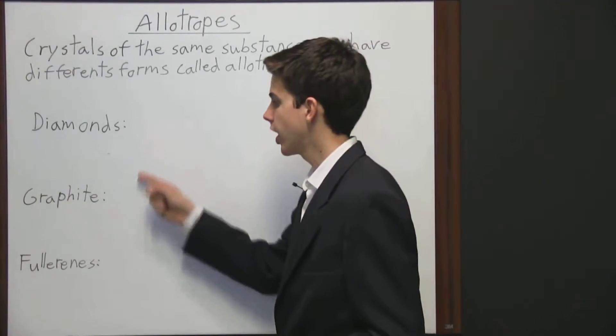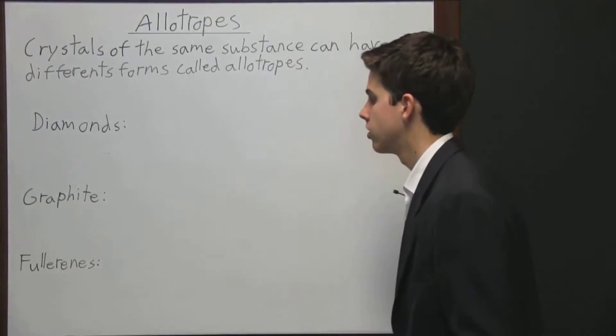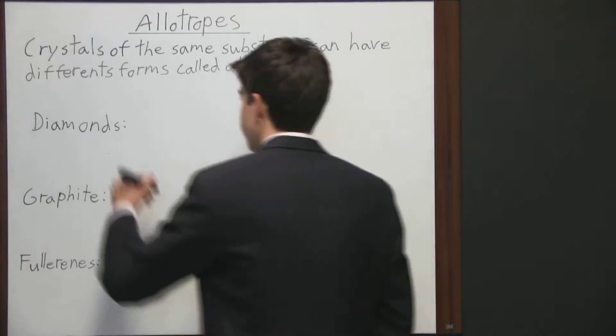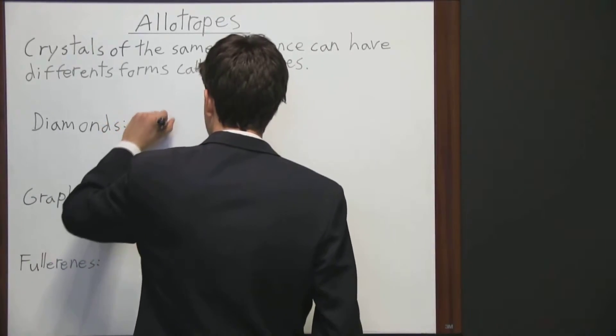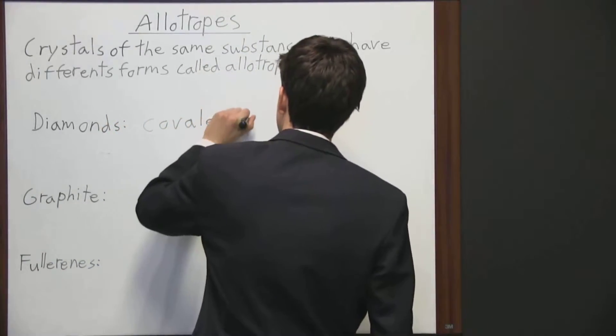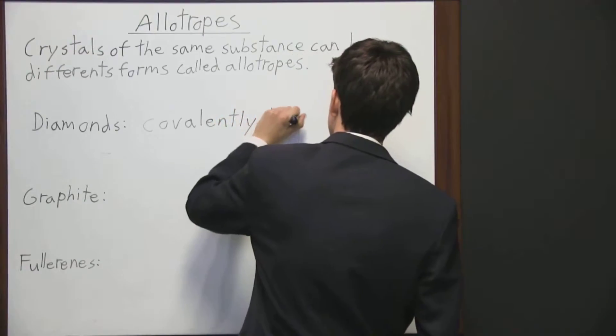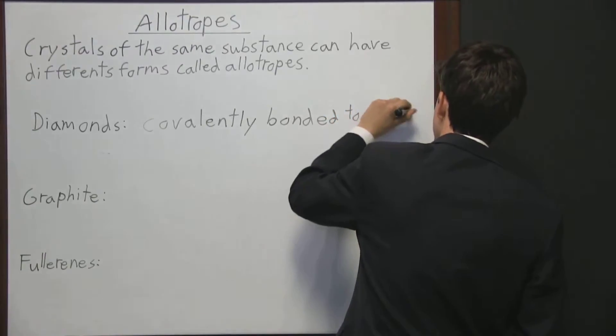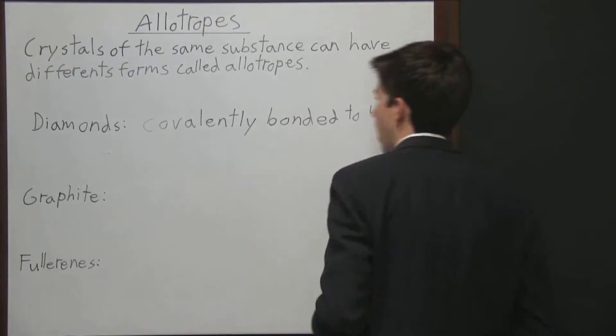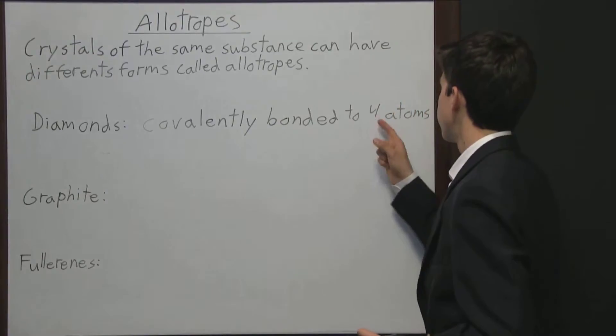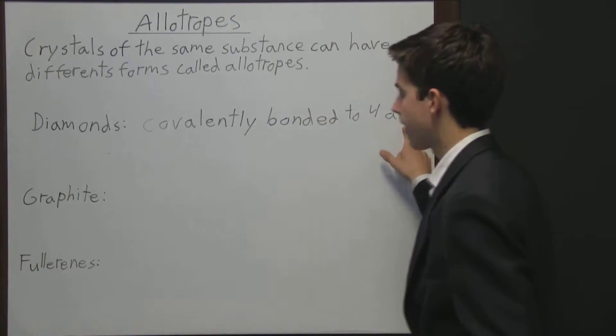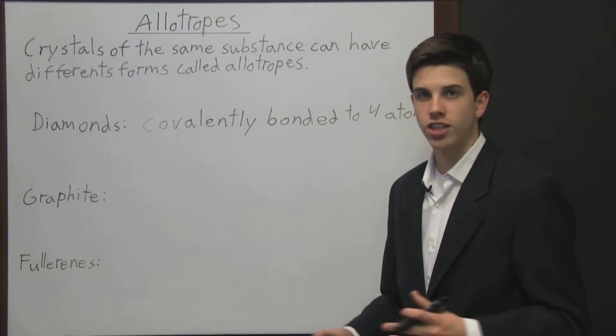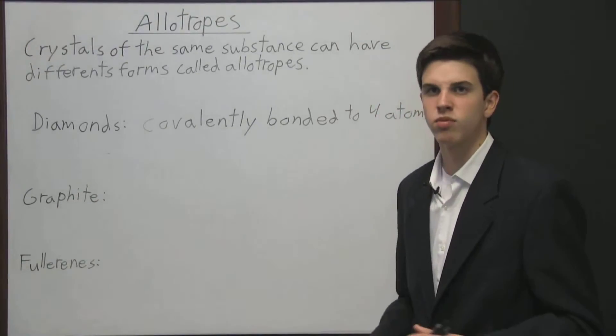So these three substances right here are all made up of carbon just in different forms or allotropes. The first is diamonds, and this is when atoms are covalently bonded to four atoms. So you have this one carbon atom that's covalently bonded to four neighboring carbon atoms and that makes diamonds. And that makes a very rigid and hard structure which is actually the hardest substance on earth.